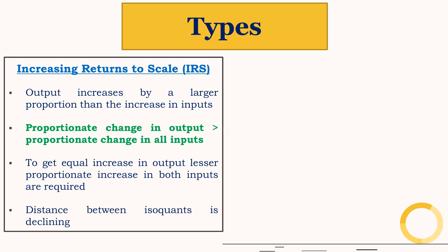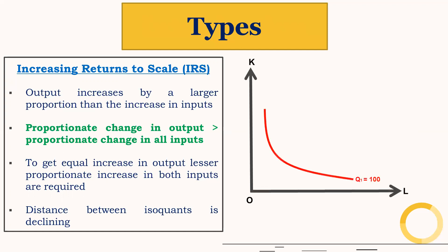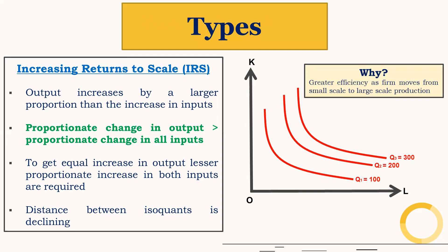So the distance between isoquants is declining — see the diagram. Here we have three isoquants: Q1, Q2, and Q3. Firms have greater efficiency as the firm moves from small-scale to large-scale production.